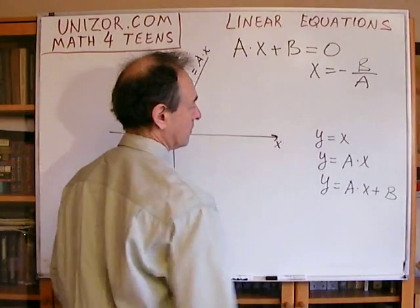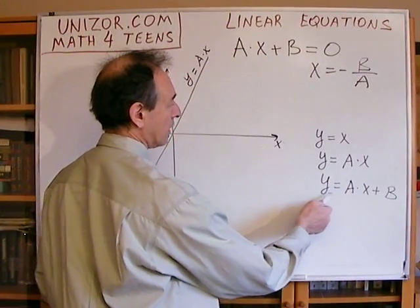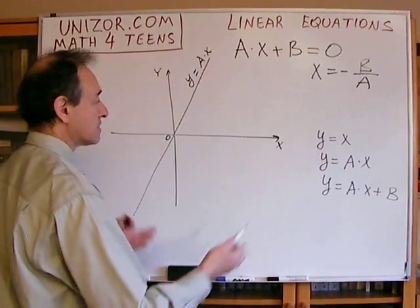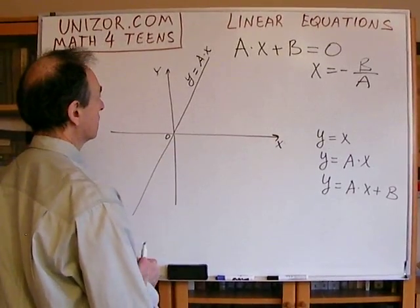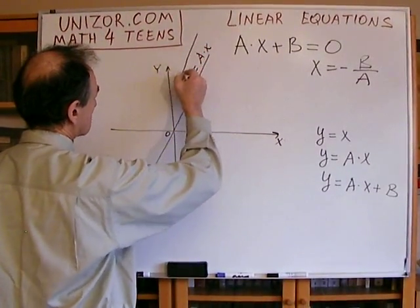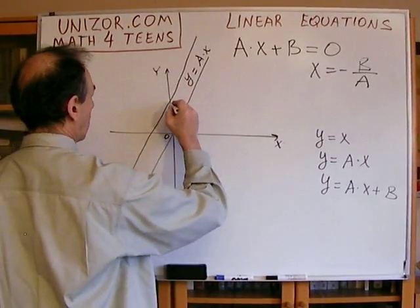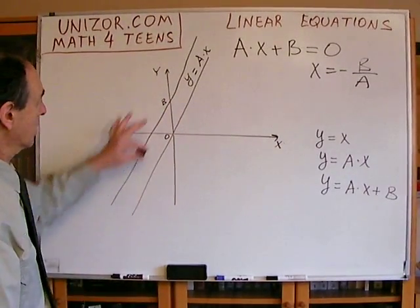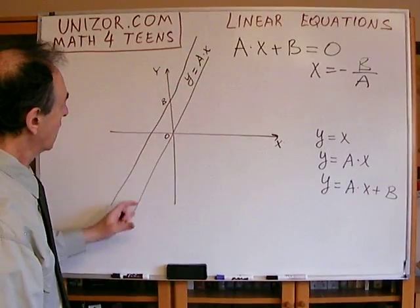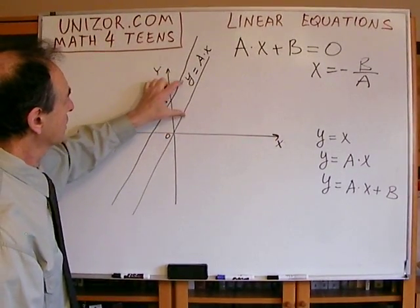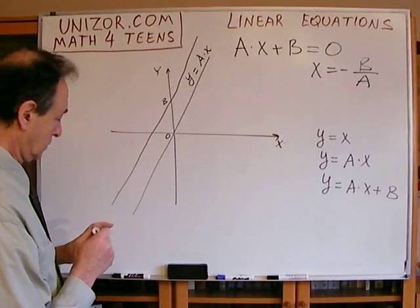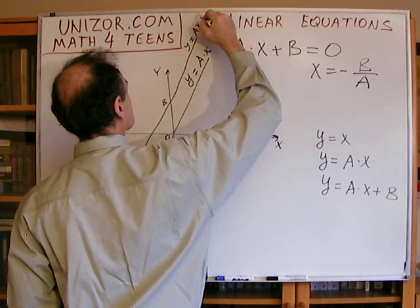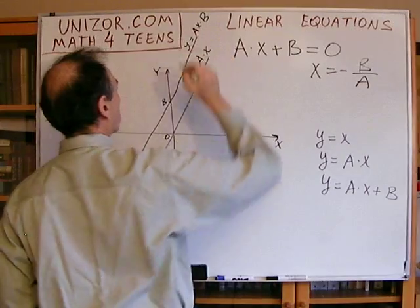Now, how about adding b? Obviously, every y value gets lifted by b — up if b is positive and down if b is negative. Assuming b is positive, the whole graph shifts upward. This particular point on the y-axis is b — we took this line and shifted it up by b. So this segment is always b, and this represents the function y equals ax plus b.